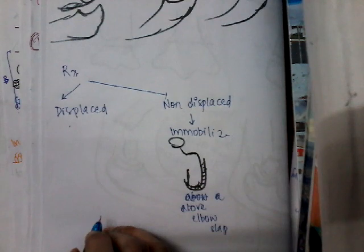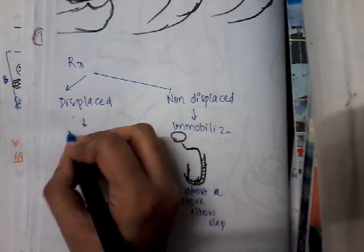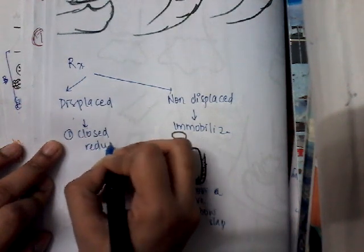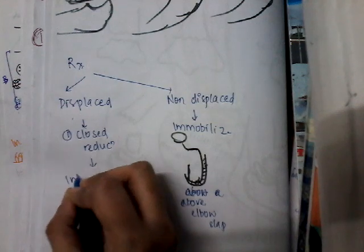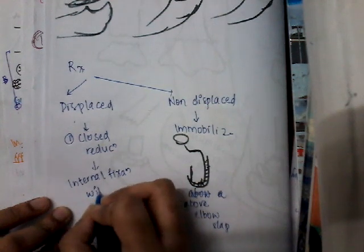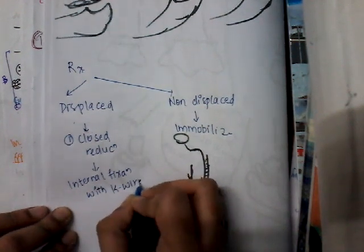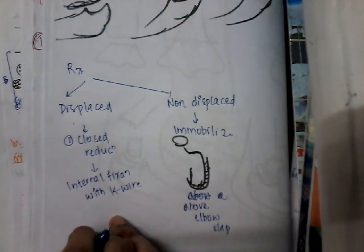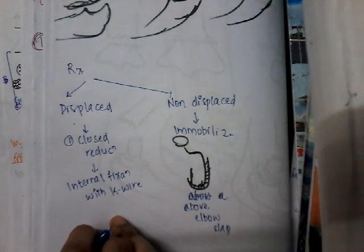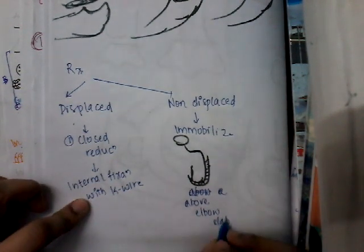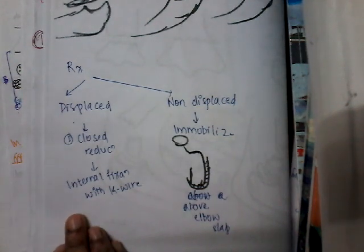If it is displaced, first you will do a closed reduction, then internal fixation with a K-wire. You can immobilize with an above-elbow slab and then do internal fixation, or do internal fixation first and then immobilize — either way is acceptable.